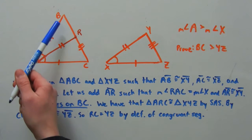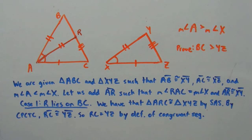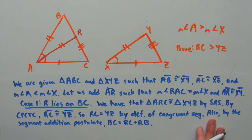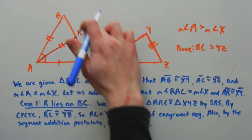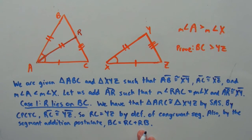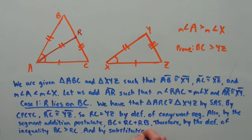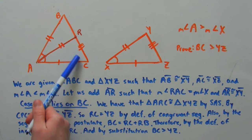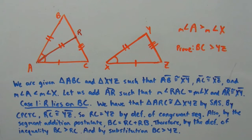But RC is part of the larger segment BC. By the segment addition postulate, BC equals RC plus RB. And because BC equals RC plus RB, by the definition of inequality, BC is greater than RC. And by substitution, since RC is equivalent to YZ, we can substitute YZ in for RC and get that BC is greater than YZ.